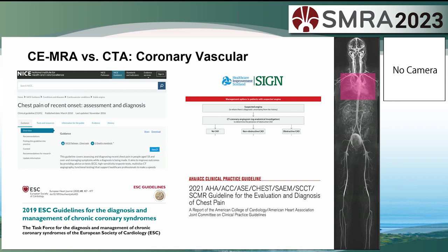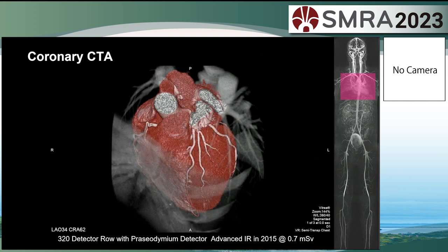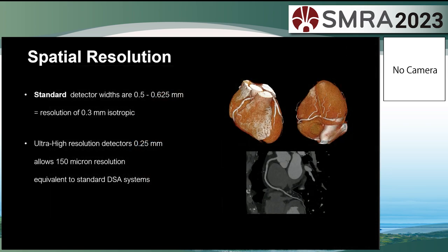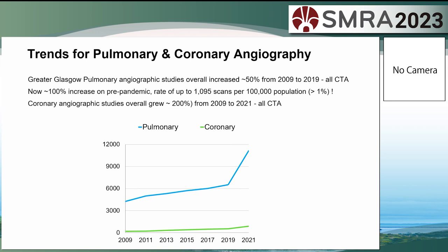The same applies to coronary imaging. Guidelines for non-invasive coronary imaging since 2016 — right up to AHA 2021 — tell us to use CT. Coronary MRA is not mentioned. Coronary CT can now be acquired in a single breath hold at very low dose, even in a single heartbeat. The images are beautiful and we can show the coronary arteries at very high spatial resolution that MRA cannot hope to compete with — spatial resolution only improving with photon-counting systems. We can even see inside 2mm-diameter stents.